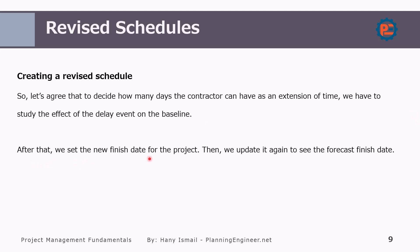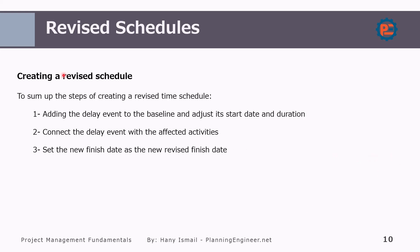After studying the delay event on the baseline, we set a new finish date for the project, then update it again to see the forecast finish date. To sum up the steps of creating a revised time schedule: add the delay event to the baseline and adjust its start date and duration; connect the delay event with the affected activities; and set the new finish date as the new revised finish date.